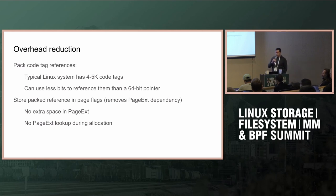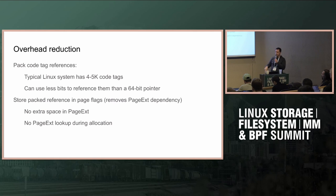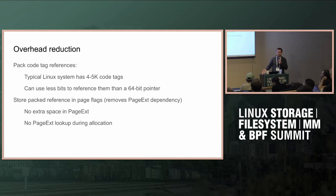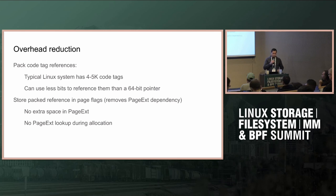Another approach is to have contiguous memory where we store pointers to the code tags, and then have an index in that contiguous array. There is an issue with fragmentation if we load and unload repeatedly, but probably when we consume the whole space, we can say from here on we are not going to account additional modules. The key idea is that instead of storing whole 64-bit pointers, we store smaller 16-bit references — and if we use 16-bit instead of 64-bit, all that overhead goes 4x smaller.